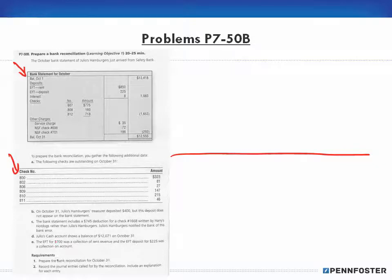It says prepare the bank rec for October 31st and record the journal entries called for by the reconciliation, including an explanation for each entry.